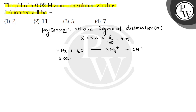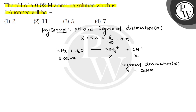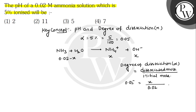ठीक है? तो अगर हम मान लें इसका x कम होगा, इसका x बन जाएगा, इसका भी x बन जाएगा. और degree of dissociation, which is alpha, is equal to dissociated moles divided by initial moles. तो alpha का value है 0.05, initially आपने लिए 0.02, और dissociate हुआ आपका x. तो x का value आजाएगा 0.02 × 0.05. Clear है?